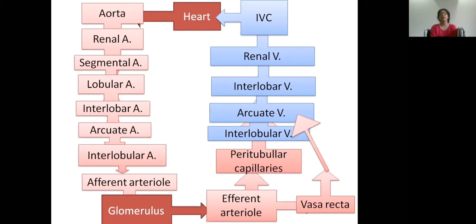The efferent arteriole gives rise to peritubular capillaries in the case of cortical nephrons, and vasa recta in the case of juxtamedullary or corticomedullary nephrons. The venous system is exactly parallel to the arterial system. Peritubular capillaries drain into the interlobular vein, which drains into arcuate veins. Vasa recta drains directly into arcuate veins. The arcuate vein drains into the interlobar vein, then into the renal vein, and renal vein drains into the inferior vena cava and finally into the heart.